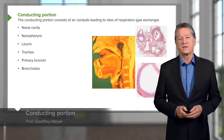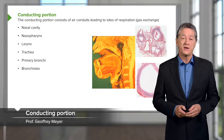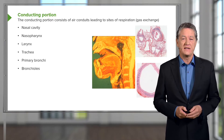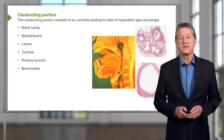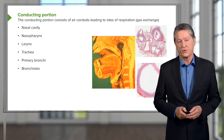Let's first look at the different portions of the lung. There are two major parts to the airways: a conducting portion and then the respiratory portion.